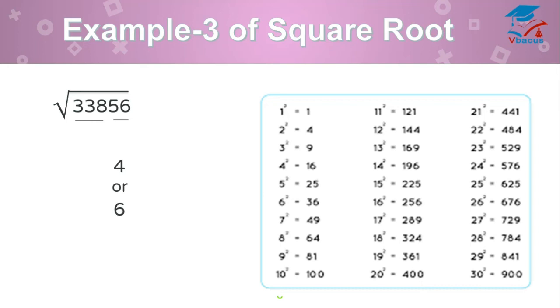Now, see where 338 is falling. 338 falls in between 324 and 361. Choose the smaller one. Square root of 324 is 18. So, write 18.